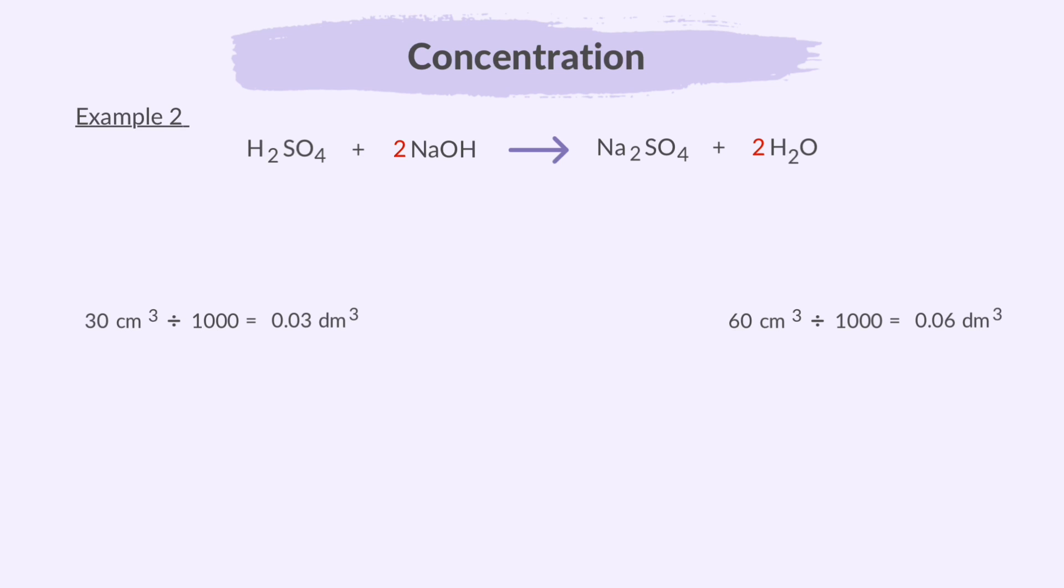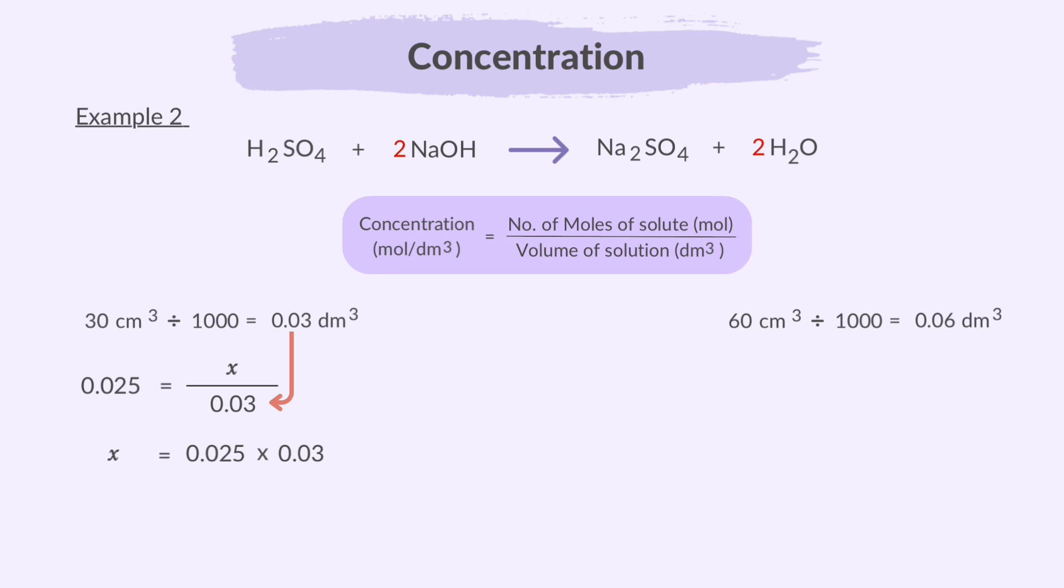First, we convert the volumes to cubic decimeters by dividing by 1000. Next, using the concentration formula, we may substitute the volume and concentration of sulfuric acid to arrive at the number of moles. So, there are 0.00075 moles of sulfuric acid. Now, look at the ratio of sulfuric acid to sodium hydroxide according to the balanced equation. 1 mole of sulfuric acid reacts with 2 moles of sodium hydroxide. Therefore, 0.00075 moles of sulfuric acid will react with how much of sodium hydroxide? Do a simple cross-multiplication and we arrive at 0.0015 moles of sodium hydroxide.